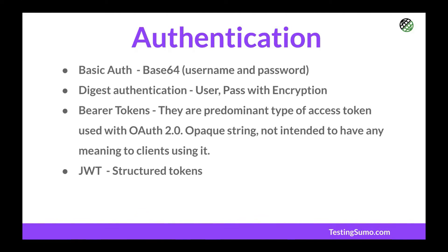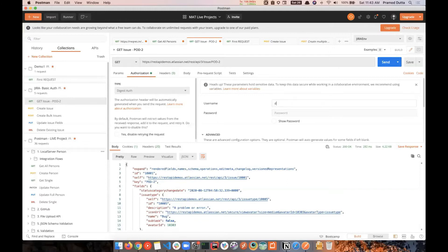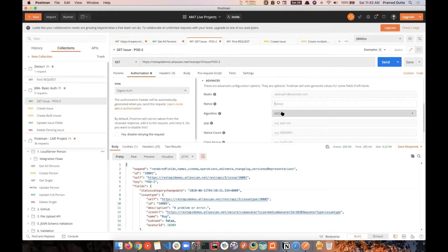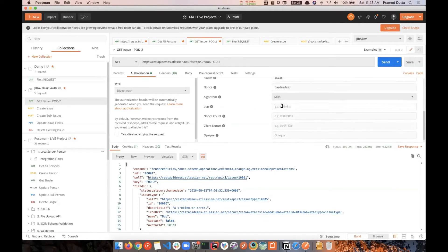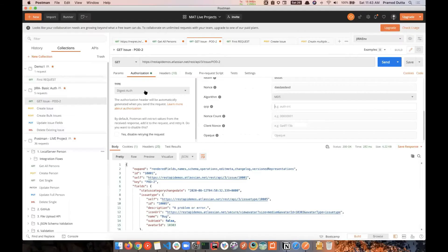Digest authentication is basically username and password with a certain kind of encryption. If you select digest, you'll see username and password fields, and additionally MD5 where you can add more information — it will be encrypted in a more secure form. Between the network, no one can sniff your username and password; only the server knows how to decrypt it.